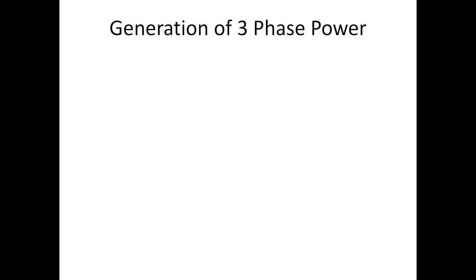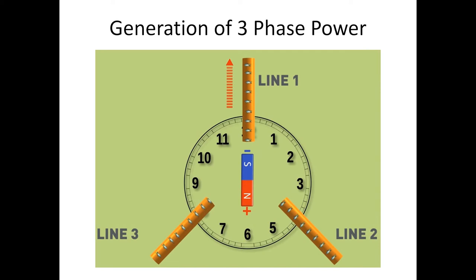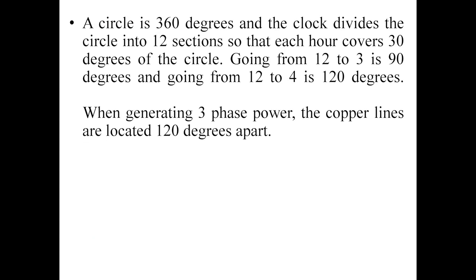Just look into this diagram. Here, Line 1, Line 2, and Line 3 indicate the conducting wires, and in the center you can find a magnet with north and south poles—north pole is marked as positive and south pole as negative. This is a rotating magnet that will be continuously rotating. We know that a circle is 360 degrees, and the clock divides the circle into 12 sections so that each hour covers 30 degrees. Going from 12 to 3 is 90 degrees, and going from 12 to 4 is 120 degrees.